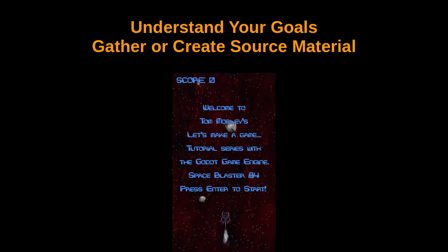Hello everyone, Tom Morley here with part two of the Space Blasters 84 tutorial series. In this video we're going to talk about the source material we'll need for this game. We need to understand the separate pieces required to compile our game, and one of the best ways to do that is to create a picture or PNG of your game.